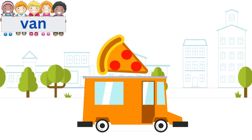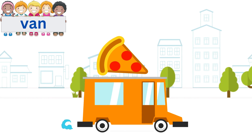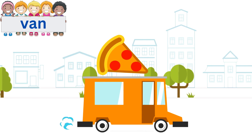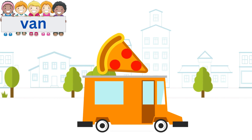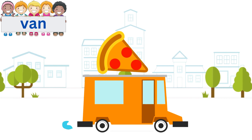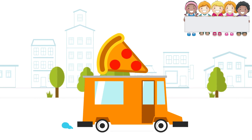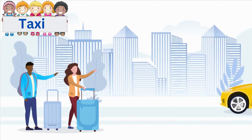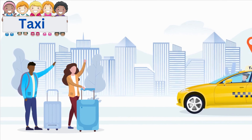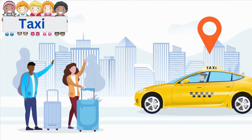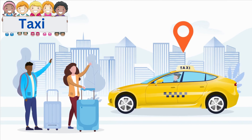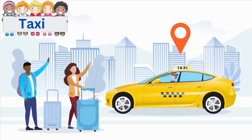A Van. Vans are vehicles that are used by courier, parcel, and cargo people. A Taxi. A taxi is a car which is used for public transport.